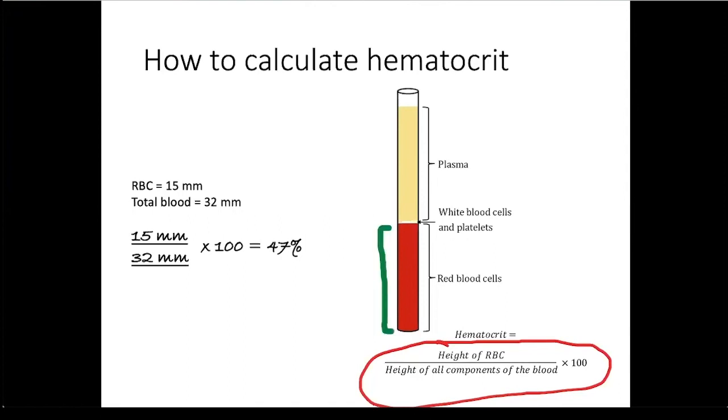This is the height of the red blood cell column. In this case, I have given it a height of 15 millimeters. This is the height of the total blood column, and I have given it a height of 32 millimeters. I will then take 15 millimeters and divide it by 32 millimeters times 100, and this will give me a hematocrit of 47%.